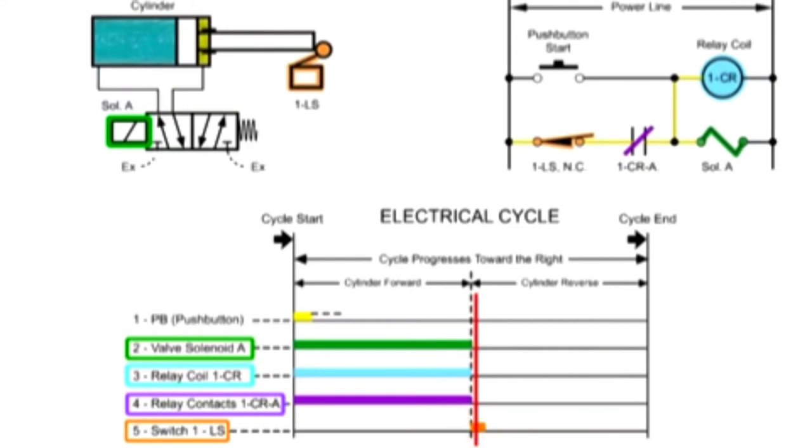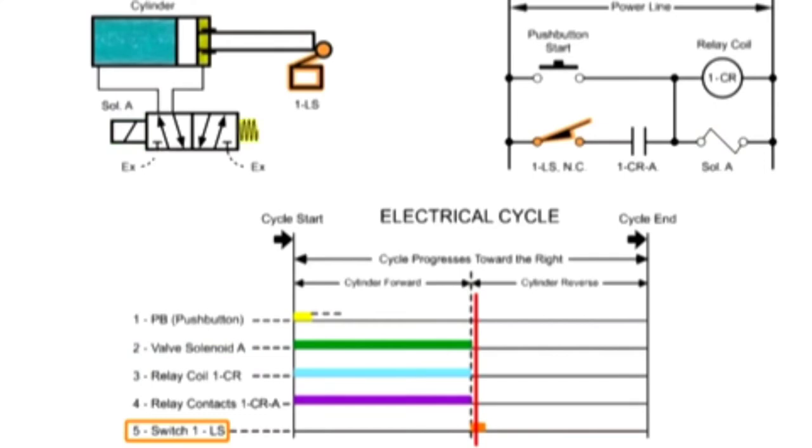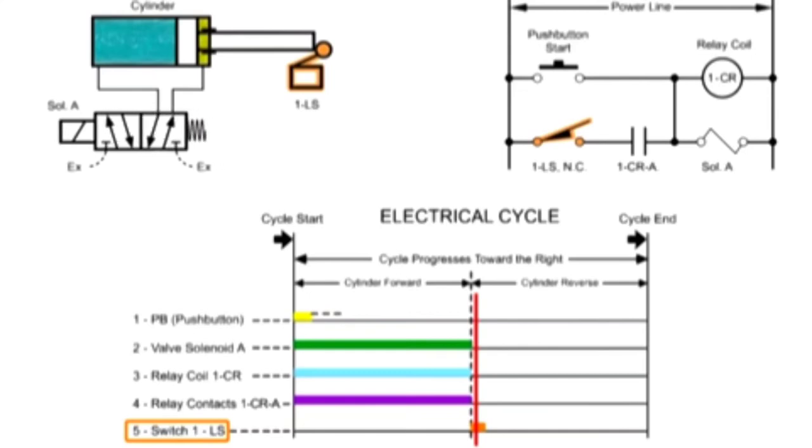When the switch contacts open, current is removed from the relay coil. Relay contacts 1CRA open, removing current from the solenoid valve. Internal springs shift the solenoid valve spool to the cylinder retract position and the cylinder starts its return stroke.